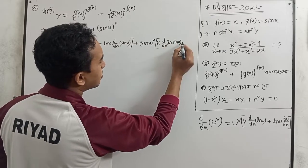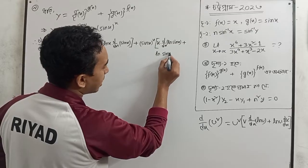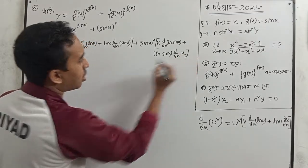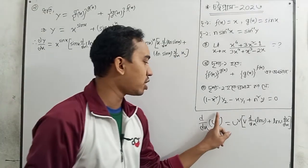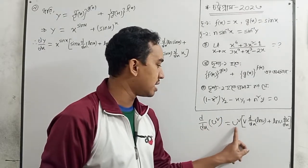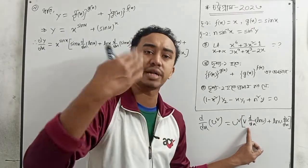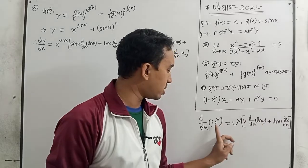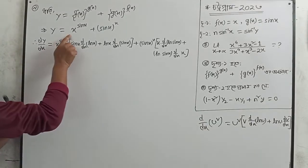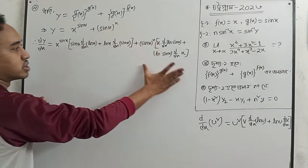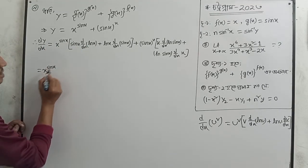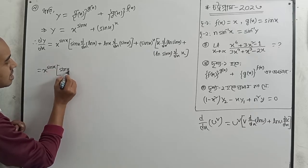So ln u means ln sin x, and that is done. We will do d/dx. In general, for u to the power v we take d/dx of u to the power v inside.